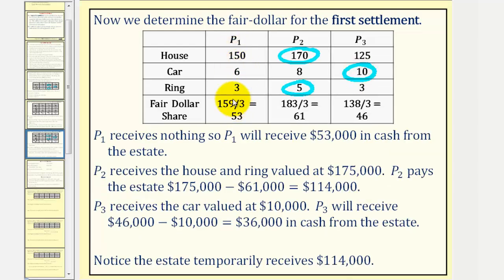Player one received nothing and therefore receives their fair share in cash, or $53,000 in cash from the estate. Player two received the house and the ring, which they valued at $175,000, and the fair share was only $61,000. So they pay the difference to the estate, $114,000, but they do receive the house and the ring.